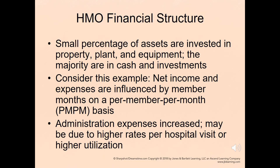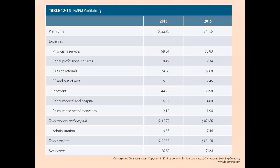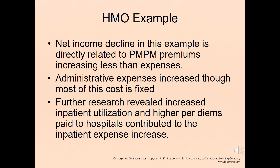The HMO financial structure shows a small percentage of assets invested in property, plant, and equipment, with the majority in cash and investments. Net income and expenses are influenced by member months on a per-member-per-month basis. Administrative expenses increased, possibly due to higher rates per hospital visit or higher utilization. Net income decline is directly related to per-member-per-month premiums increasing less than expenses. Further research revealed increased inpatient utilization and higher per diems paid to hospitals contributed to the inpatient expense increase.